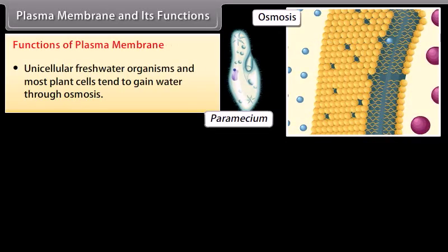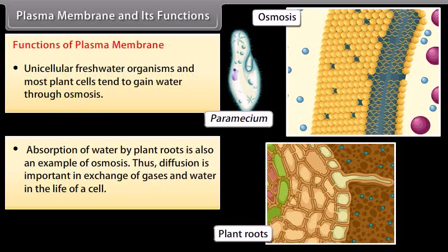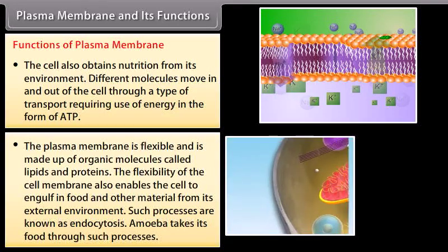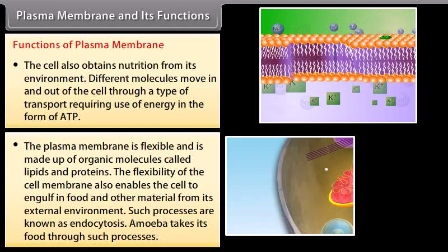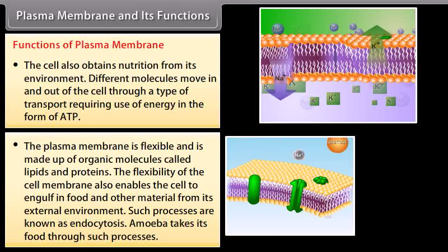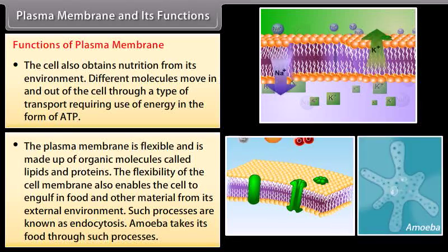Functions of plasma membrane: Unicellular freshwater organisms and most plant cells tend to gain water through osmosis. Absorption of water by plant roots is also an example of osmosis. Diffusion is important in exchange of gases and water in the life of a cell. The cell also obtains nutrition from its environment; different molecules move in and out of the cell through a type of transport requiring use of energy in the form of ATP. The plasma membrane is flexible and is made up of organic molecules called lipids and proteins. This flexibility enables the cell to engulf food and other materials from its external environment through a process known as endocytosis. Amoeba takes its food through such processes.